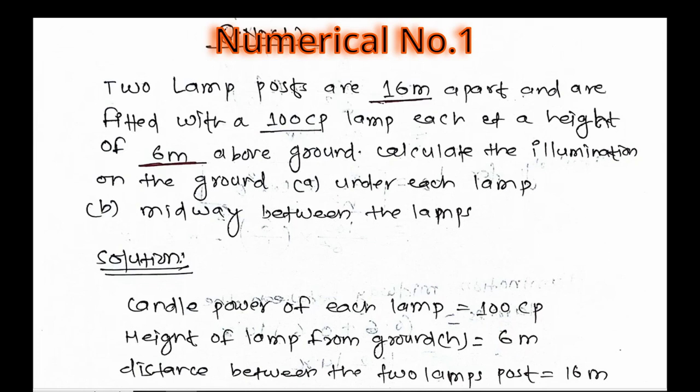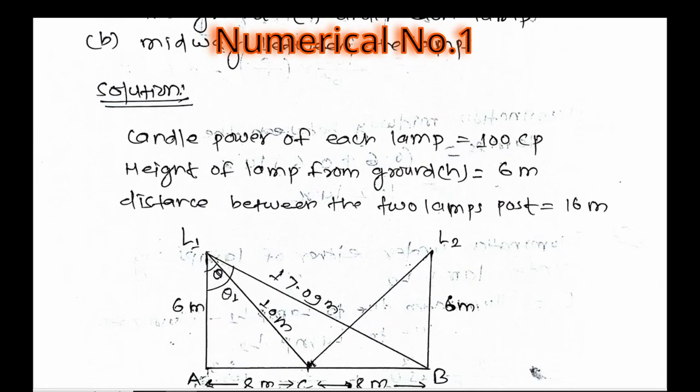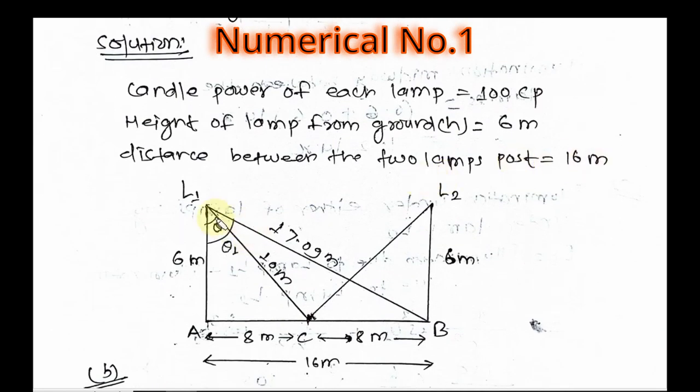The distance between two lamp posts is 16 meters. From the given data, we construct the figure. Let A and B be the lamps L1 and L2, with each lamp at a height of 6 meters.